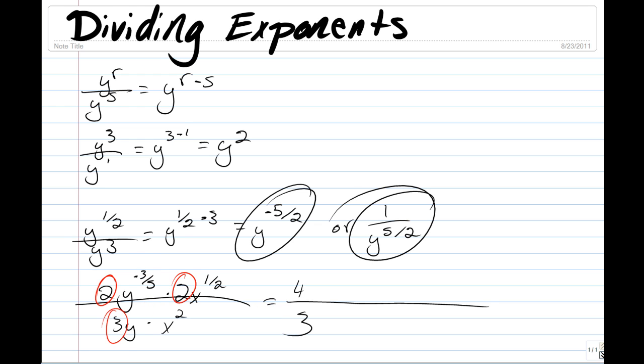Then we're going to subtract both of these exponents. So we have y to the power of negative 3 over 5 minus 1, times x to the power of 1 half minus 2, which equals 4 over 3.